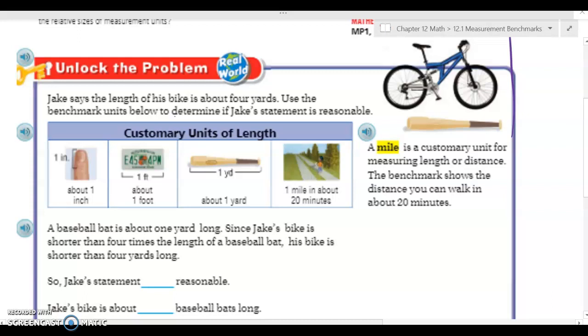Jake says that the length of his bike is about four yards. Use the measurement units below to determine if Jake's statement is reasonable. So we're going to be looking at customary units of length first. So how long is something?